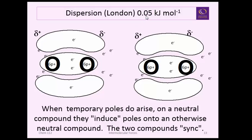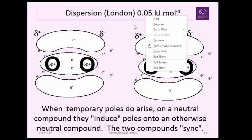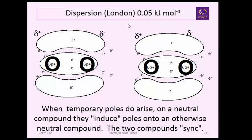So this is a very weak on the order of almost an order of magnitude below even dipole dipole interaction and that explains how two things that are covalent can bond to each other even though they